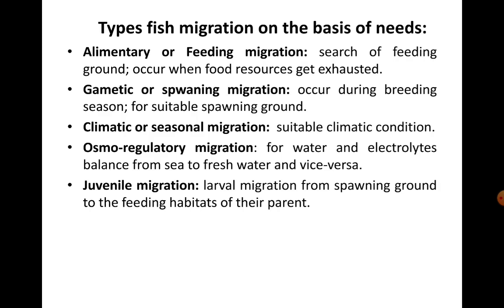We come across different types of fish migration based on their needs. Alimentary or feeding migration occurs when the search for feeding ground is needed or when feed resources get exhausted — they are bound to move from one place to another in search of food. Gametic or spawning migration occurs during breeding season to find a suitable spawning ground. Climatic or seasonal migration occurs in order to find a suitable climatic condition, either to avoid extreme hot or extreme cold temperatures.